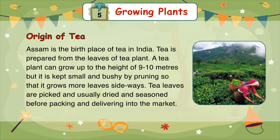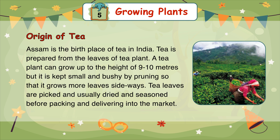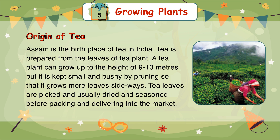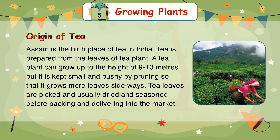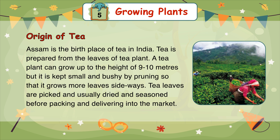Tea is prepared from the leaves of the tea plant. A tea plant can grow up to a height of 9 to 10 meters, but it is kept small and bushy by pruning so that it grows more leaves sideways. Tea leaves are picked and usually dried and seasoned before packing and delivering to the market.